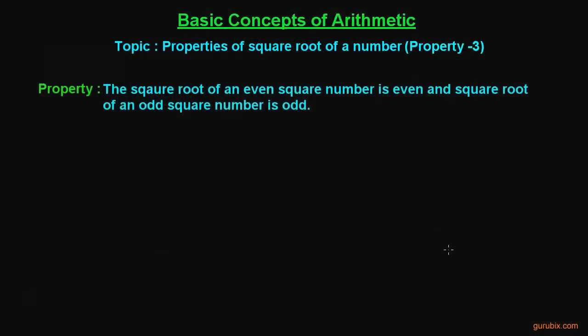Welcome friends. In this video, we shall learn one of the properties of square root of a number. The property is as follows: the square root of an even square number is even, and the square root of an odd square number is odd. Let me give you some examples to help you understand.